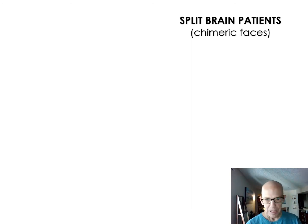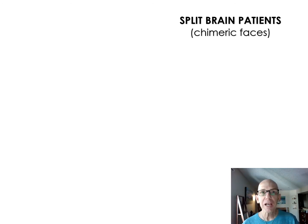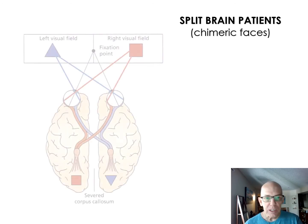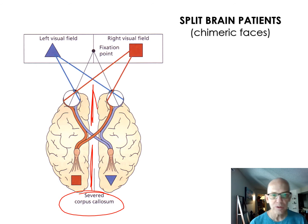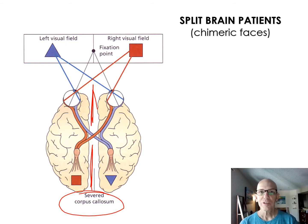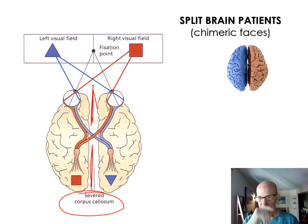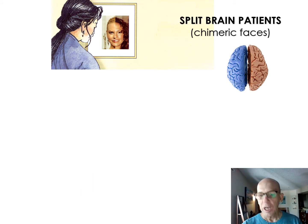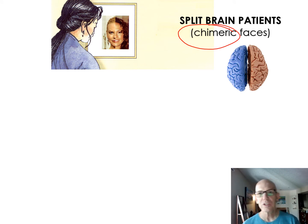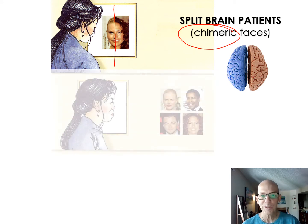The second thing to discuss is split-brain patients. Back around the 1970s, patients with severe epilepsy would go in and have their corpus callosum — the bridge — severed. Now they essentially have two hemispheres that don't communicate with each other. To demonstrate this, they show these patients a chimeric face — half Nicole Kidman on one side, half Jennifer Lopez on the other.